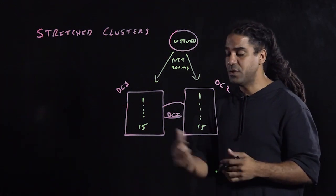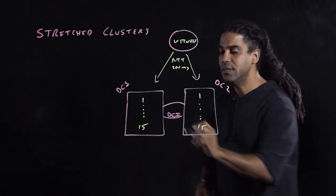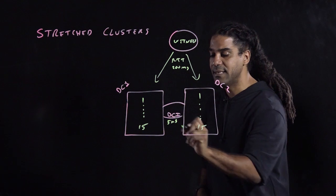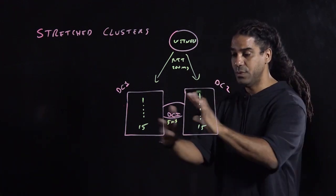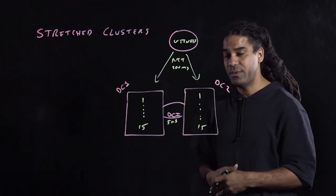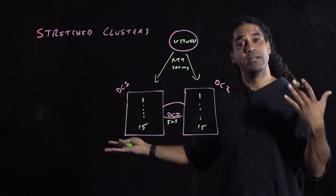So that said, another condition is that between the two data centers, you have to have no more than five millisecond round trip delay either. So the two data centers have to be close in proximity to each other, more like a metro cluster if you wish.